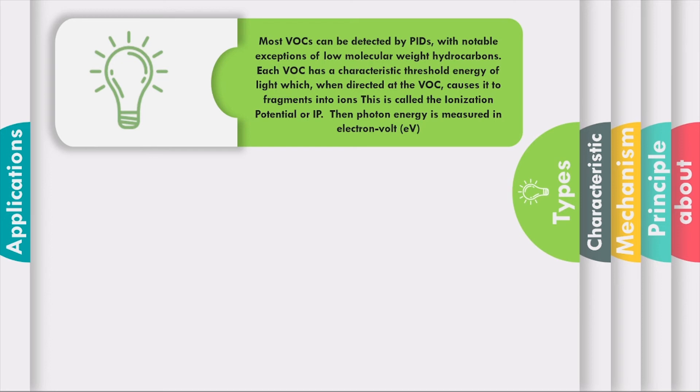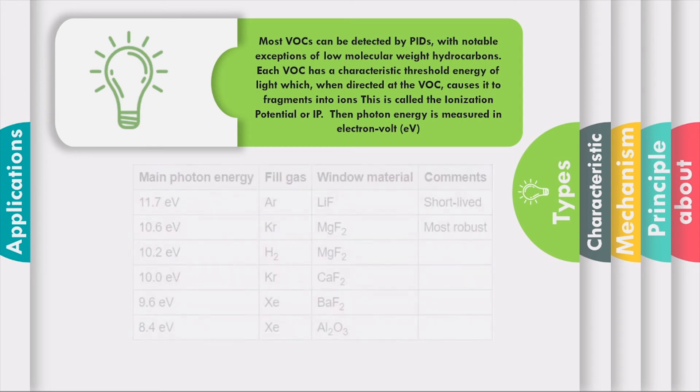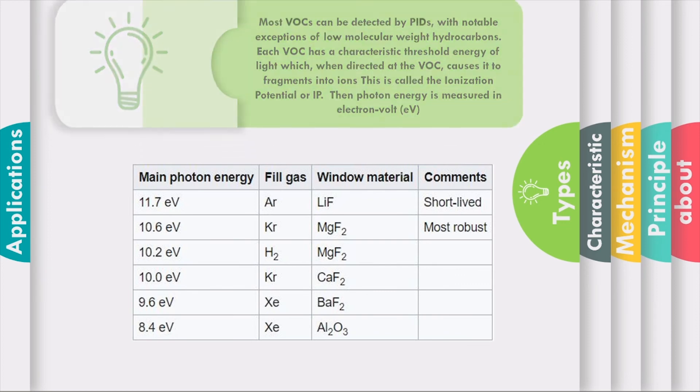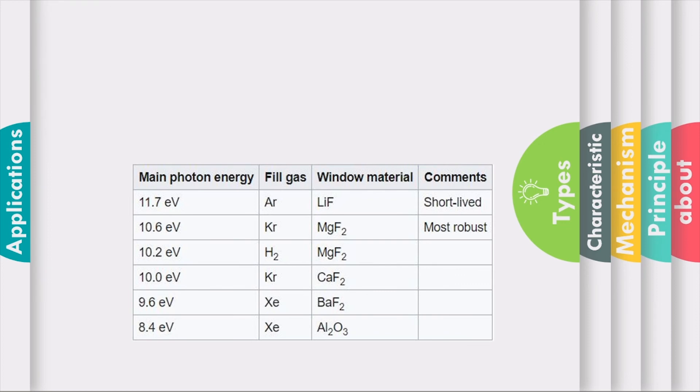The photon energy is measured in electron volts. This table below shows the main photon energy that the PID can handle, the fuel gas of each main photon energy, and its window material. You could say that PID lamp photon emission depends on the type of fuel gas, which defines the light energy produced, and the lamp window which affects the energy of photons that can exit the lamp.